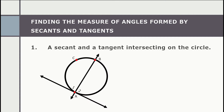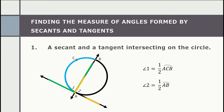Number one: a secant and a tangent intersecting on the circle. In the given figure, the secant and tangent intersect at point A, forming two angles — angle one and angle two. Each angle intercepts a certain arc. Just like the formula for an inscribed angle, we take half the measurement of the intercepted arc. So for angle one, our formula is half the measure of arc ACB, because angle one intercepts arc ACB.